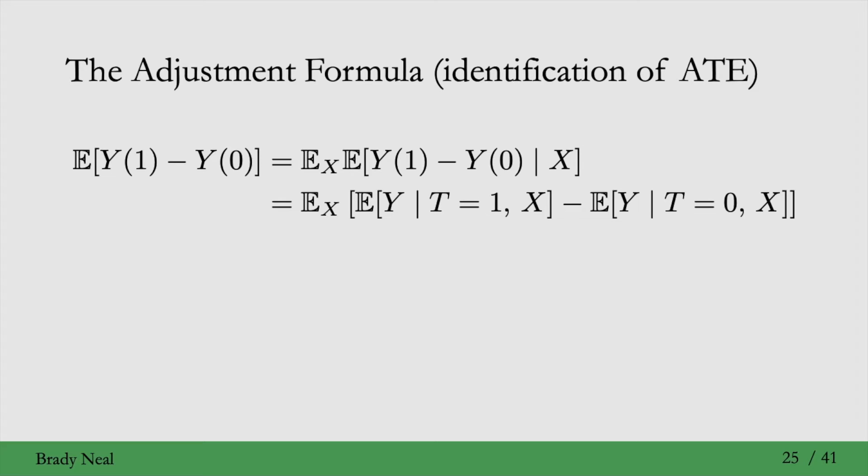To get the adjustment formula, we simply marginalize out X. So we just took what we had on the previous slide and added the expectation over X on the outside.